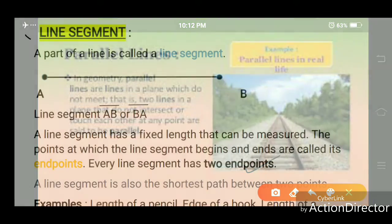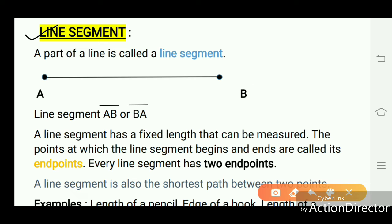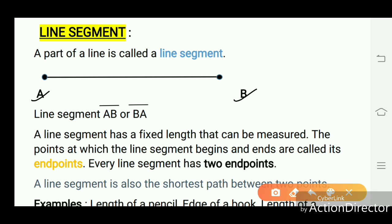Line segment: a part of a line is called a line segment. First we take two points A and B, then we join these both points — these two points make a line segment. The name of this line segment is AB or BA, and the bar symbol above is the notation for a line segment. A line segment has a fixed length that can be measured. The points at which the line segment begins and ends are called its endpoints. Every line segment has two endpoints.